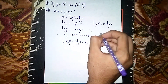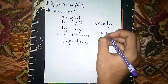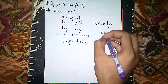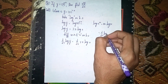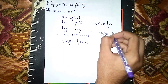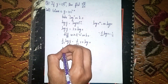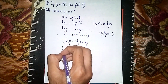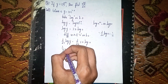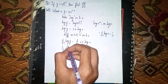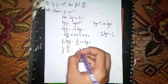On the left side, d/dx of log y equals 1 by y. Since y is a function of x, we apply the chain rule, so the left side becomes 1 by y into dy by dx.